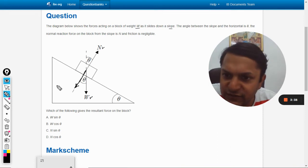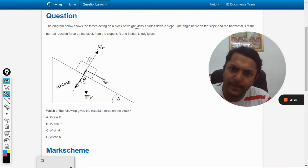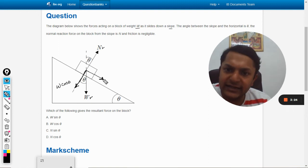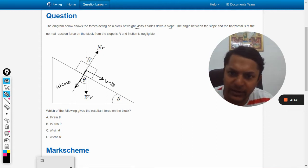Okay, so this will be W cos theta and another component will be like this and this is going to be W sin theta.